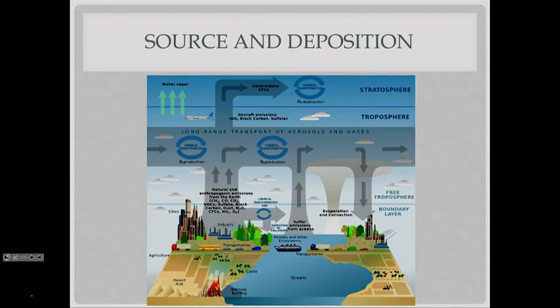There are many sources of air pollution. Many of these sources are what we call anthropogenic, which means they're generated by the activities of man, but not all of them are.